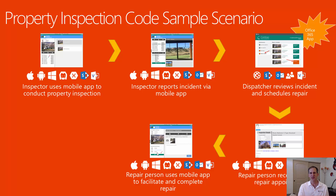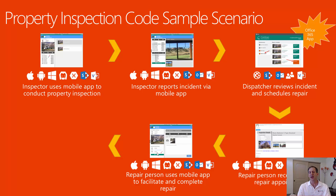The repair person goes on site to the same property where the incident was found and repairs it. They have all the information they need right at their fingertips on their mobile device — what was reported by the inspector, additional notes the dispatcher put in, and then they can repair it. After they conduct the repair they can take pictures, document their repair, and submit that back into the system all from a mobile basis.